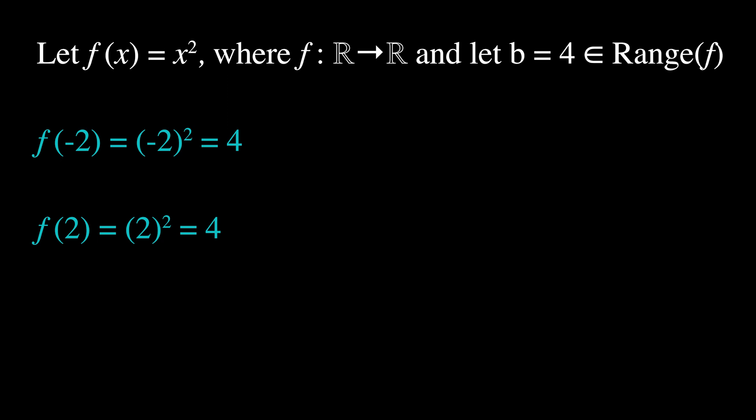Therefore, the pre-image of 4 under f is f⁻¹(4) = {-2, 2}. The concept of pre-image is useful in many areas of mathematics, including algebra, topology, and set theory. It allows us to analyze the inverse of a function, which is a function that maps elements from the range of f back to elements in the domain of f.